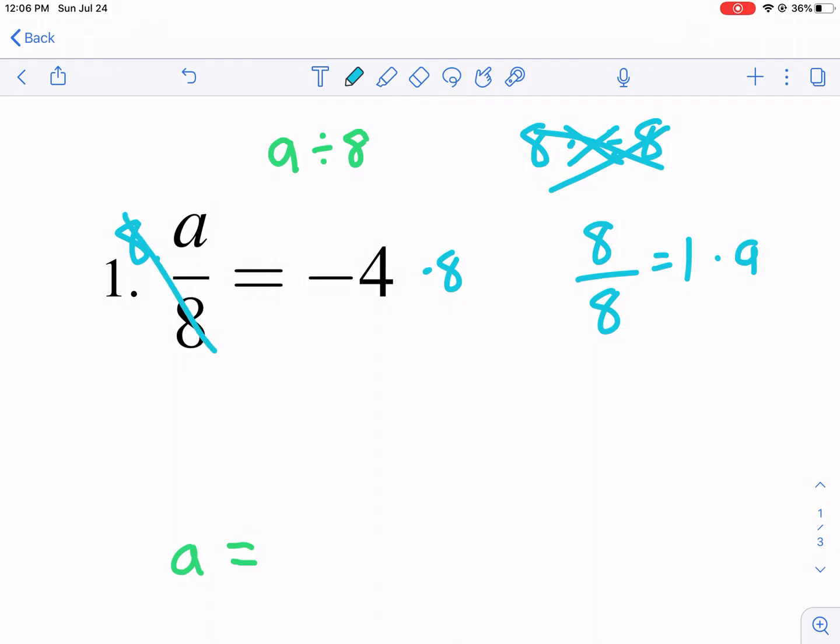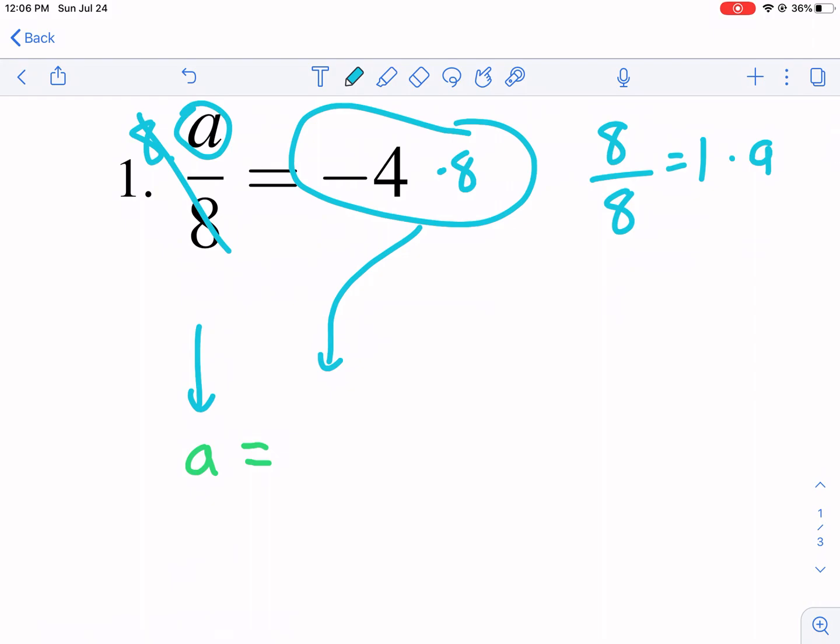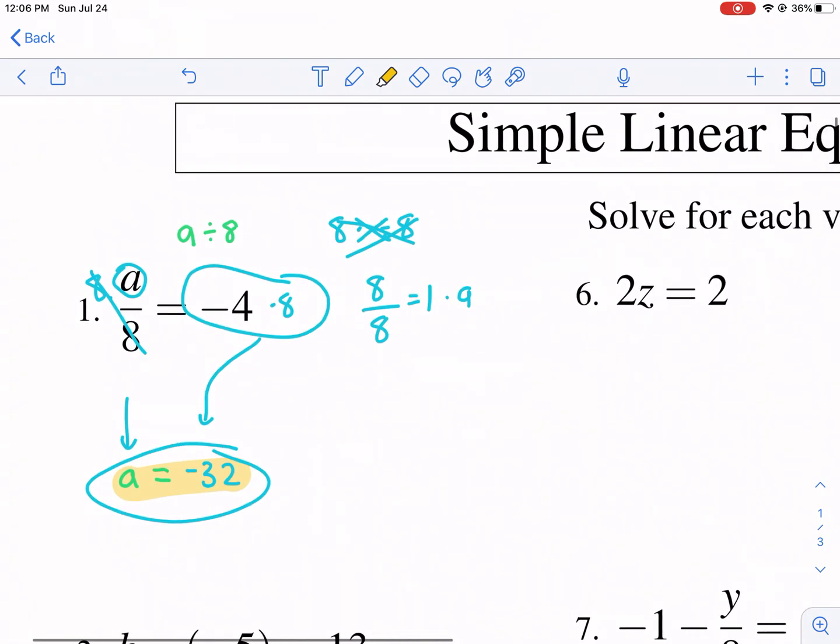So after we do this, these cancel, and we're left with just a. Then we have negative 4 times 8, and that goes on the right side. And that's going to be our value of a. Negative 4 times 8, negative times a positive is going to give us negative 32. And that's our answer. So a equals negative 32.